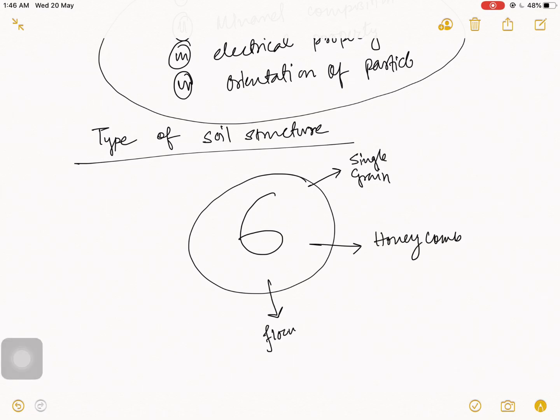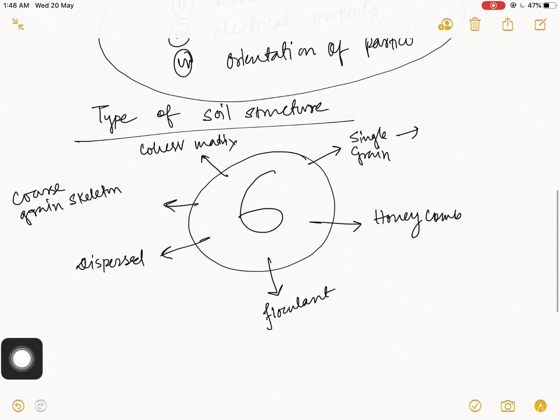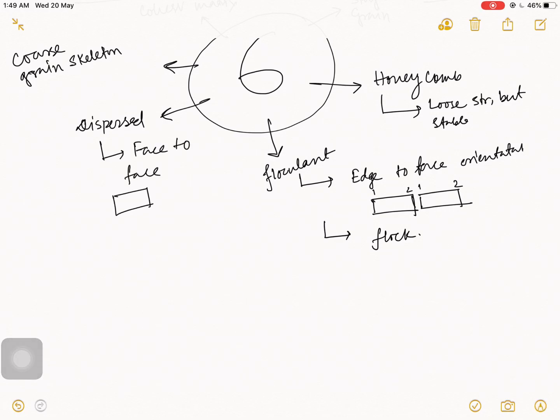In this video we talk about these six types of soil structure. First, single grain soil structure means individual particles. Honeycomb structure means loose structure but stable. Flocculant means particle to particle, edge to face orientation. This is edge and this is face, one to one, two to two, they are creating floc. Disperse means their orientation face to face, like one to two, two to one, one to two.